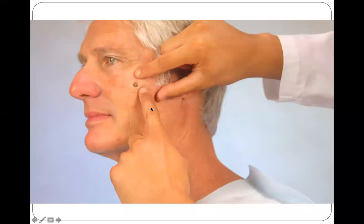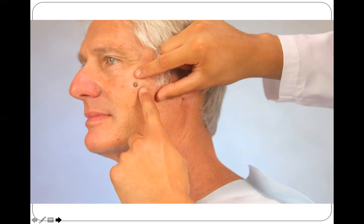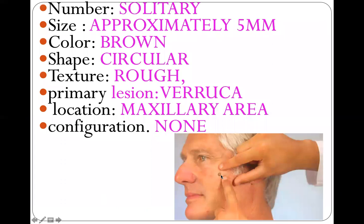Here is an example: a lesion found in the zygomatic area or cheek of the left side of the patient's face. Number: solitary. Size: approximately 5 mm. Color: brown. Shape: circular. Texture: rough. Primary skin lesion: verruca. Location: maxillary area. Configuration: none. That is how you describe a lesion found on the skin of your patient.